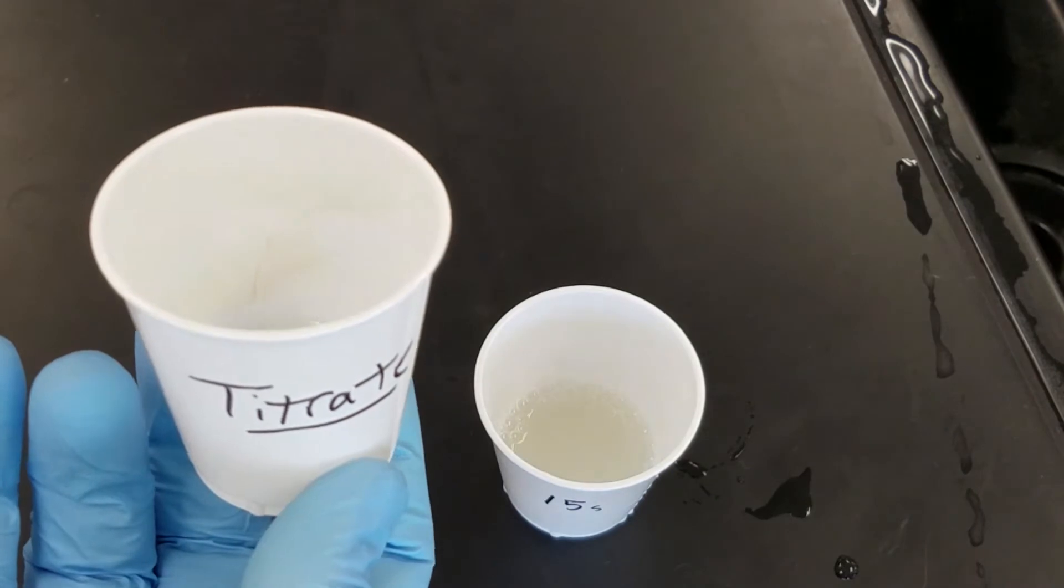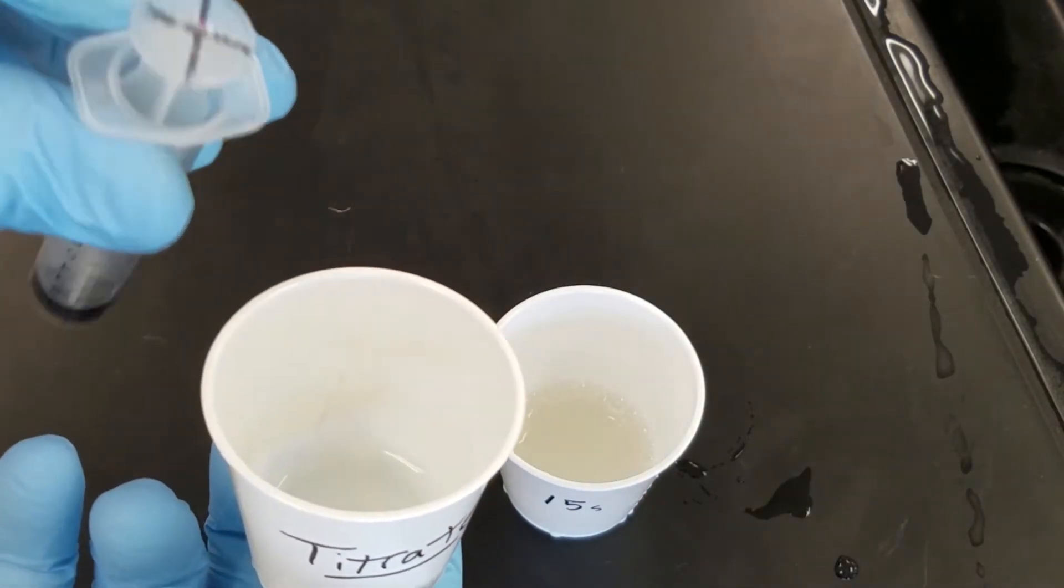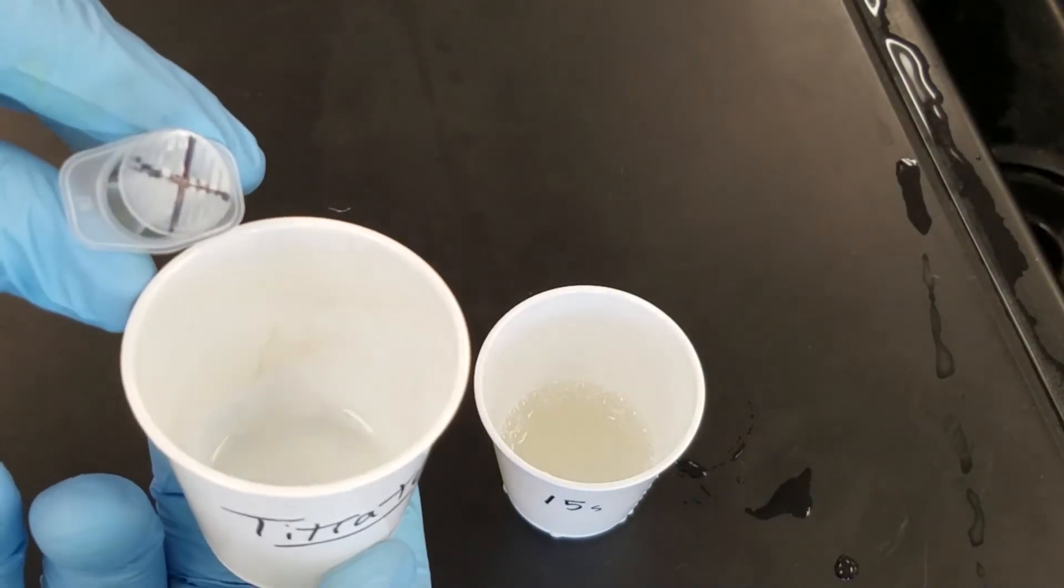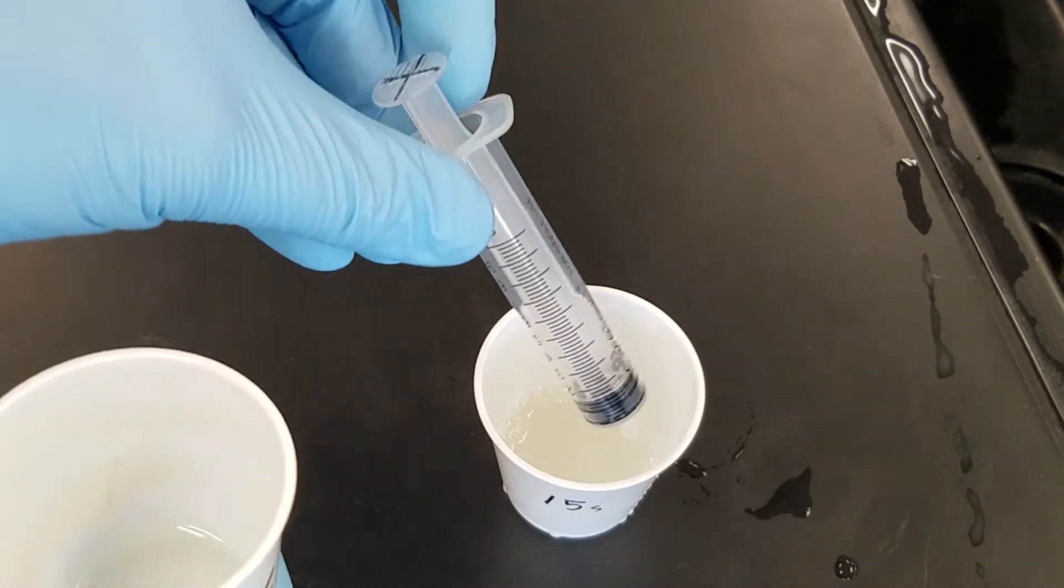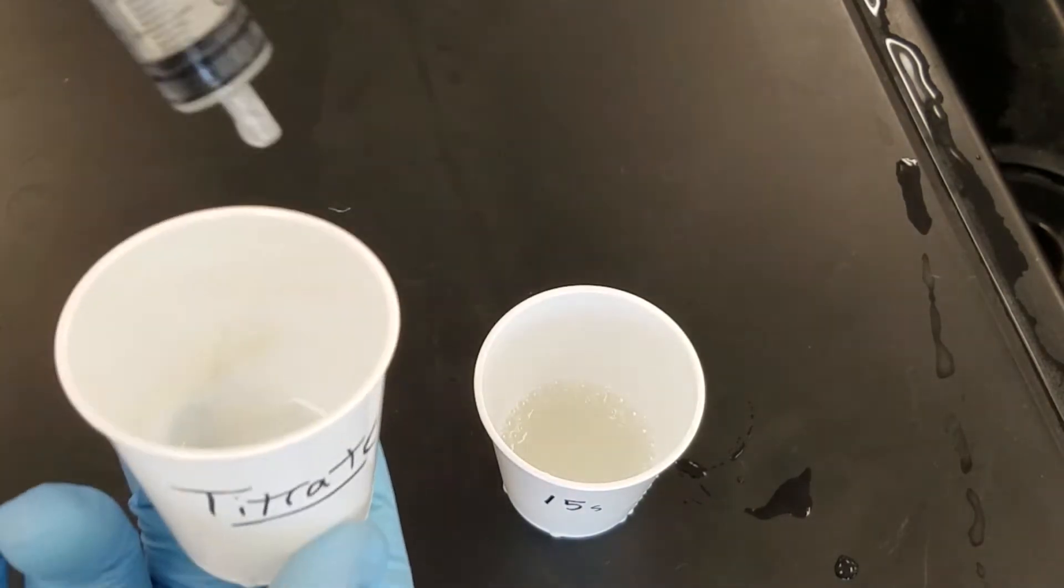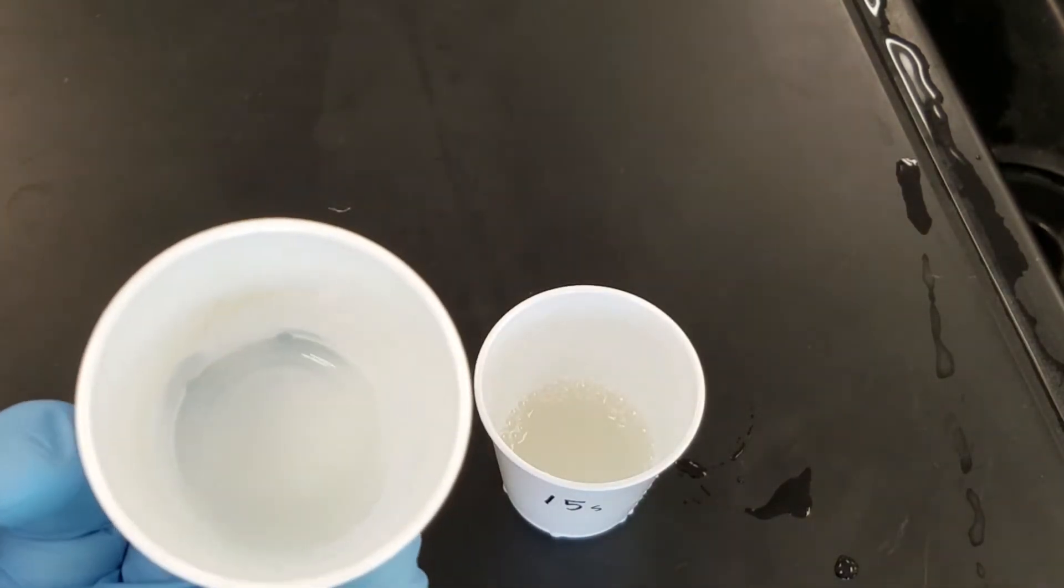To titrate, simply grab your titrate cup as well as your syringe that is meant to be the sampler and it has the X on it. You're going to suck out a total of 5 milliliters of the sample and put it in your titrate cup as I've already done here.